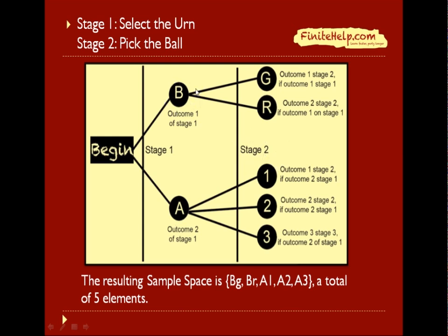For urn B there are two possible outcomes, so two branches branching off of urn B, which are green and red. For urn A there are three possible outcomes, so three branches branching out of urn A, which is ball number 1, ball number 2, and ball number 3.